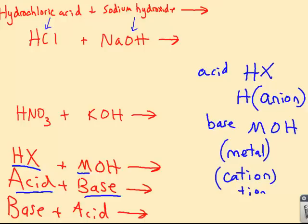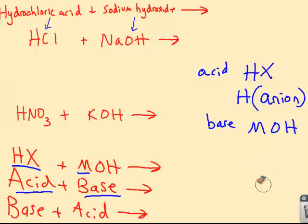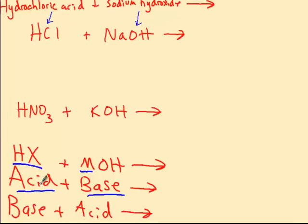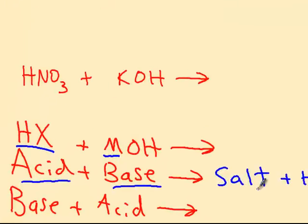All right, so let me get rid of this stuff now. So we can focus on the bottom, which is, again, the whole point of this, which is predicting the products of this reaction. Now the general form is an acid plus a base yields what is known as a salt plus water. Now we think salt, NaCl, yeah, NaCl is a salt. Table salt is the common name for it. But any cation from a base and the anion from an acid, meaning an ionic substance, is classified as a salt.